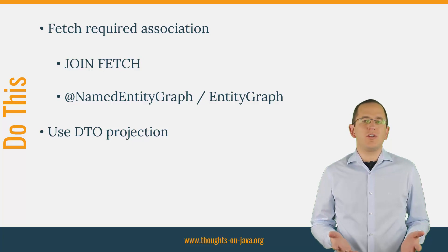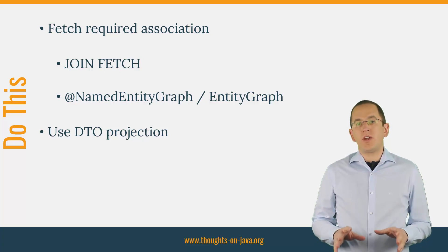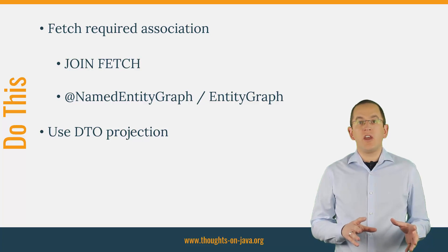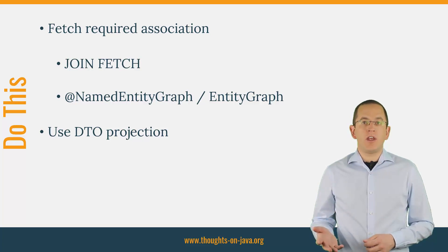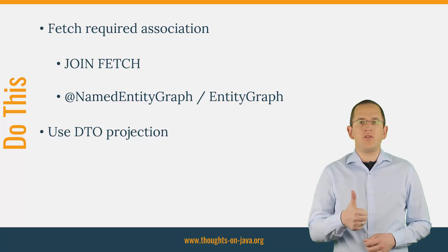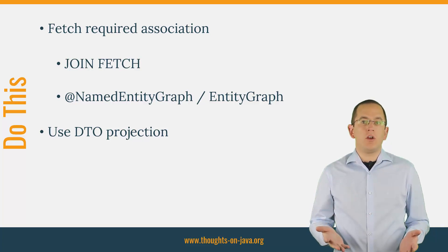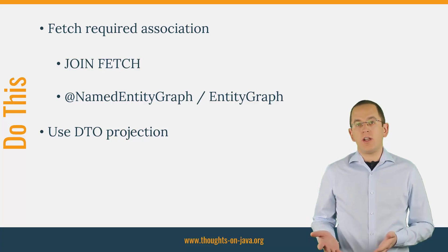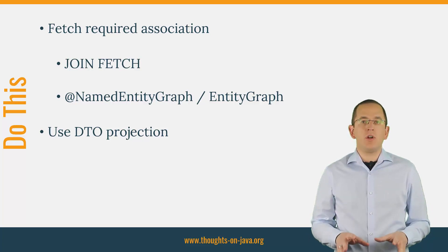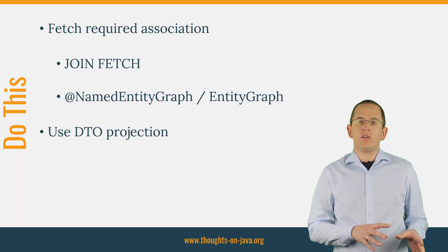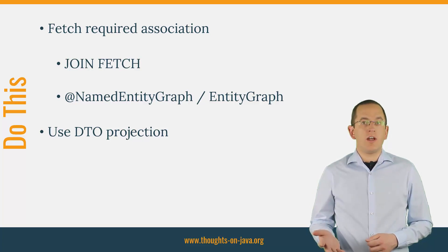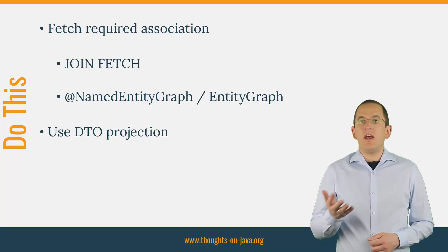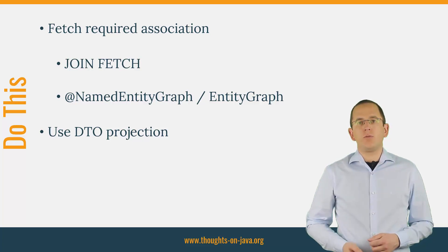So what should you do instead? The right way to fix a lazy initialization exception is to fetch all required associations within your service layer. The best option for that is to load the entity with all required associations in one query. Or you can use a DTO projection, which doesn't support lazy loading and needs to be fully initialized before you return it to the client. Let's take a closer look at the different options to initialize lazily fetched associations and the best way to use DTO projections.